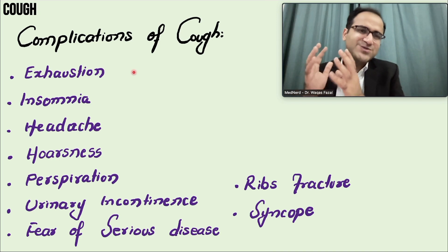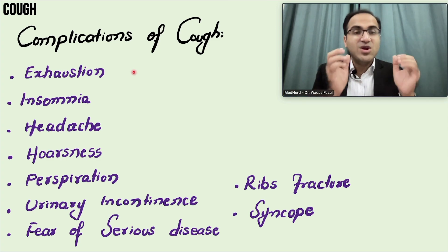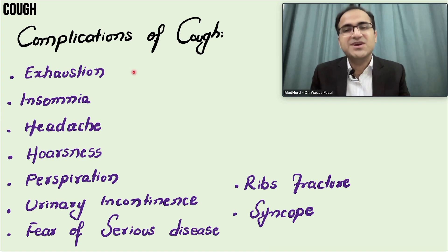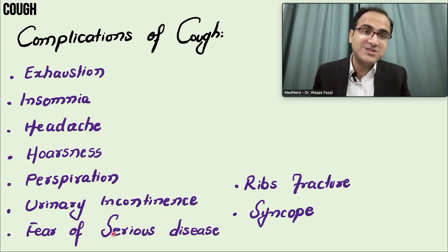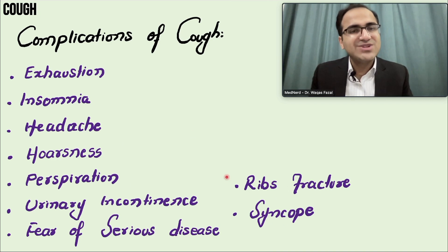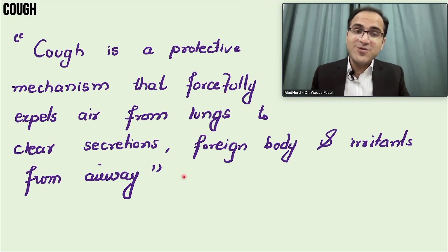Acute cough due to infections resolves when the infection is treated. Subacute post-infectious cough lingers but does not need much treatment. Chronic cough is debilitating and may not have a protective effect. Complications of cough include exhaustion, insomnia, headache, hoarseness of voice, perspiration, urinary incontinence, fear of serious disease, rib fractures, and syncope. Young patients with chronic dry cough from post-nasal drip or GERD often worry about having lung cancer.